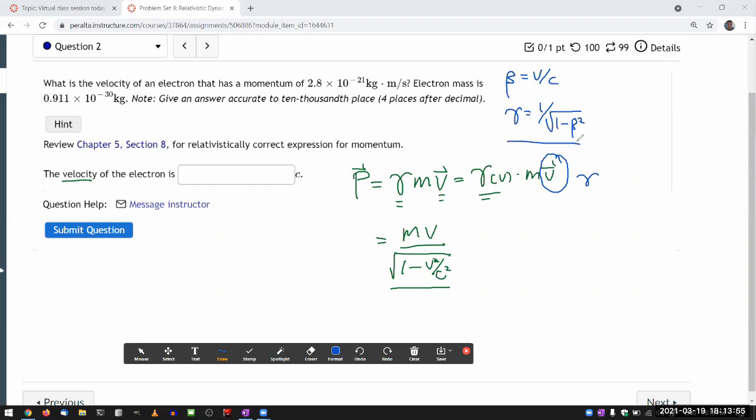And when you invert this relationship and solve for beta, then what you get is actually pretty simple. Beta is equal to square root of one minus one over gamma squared.